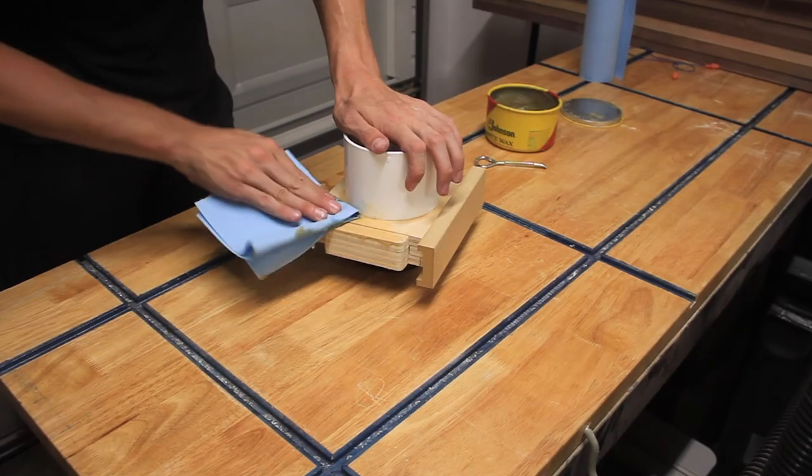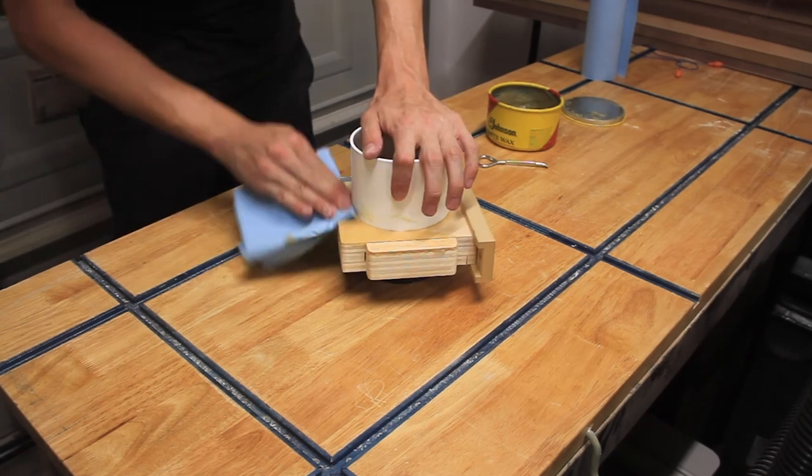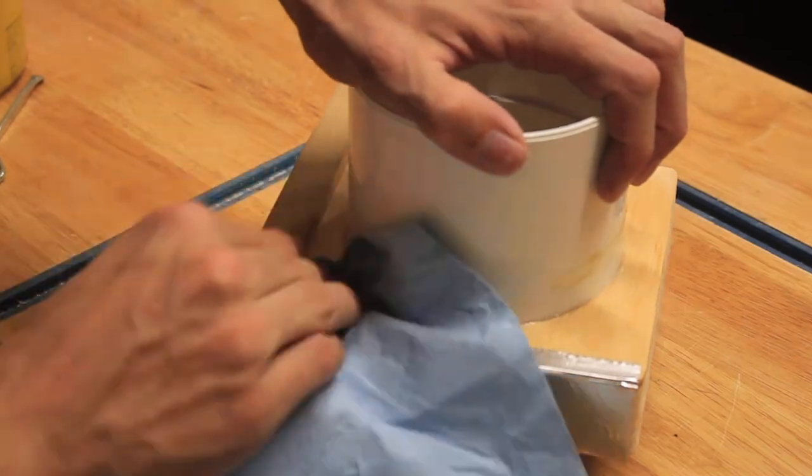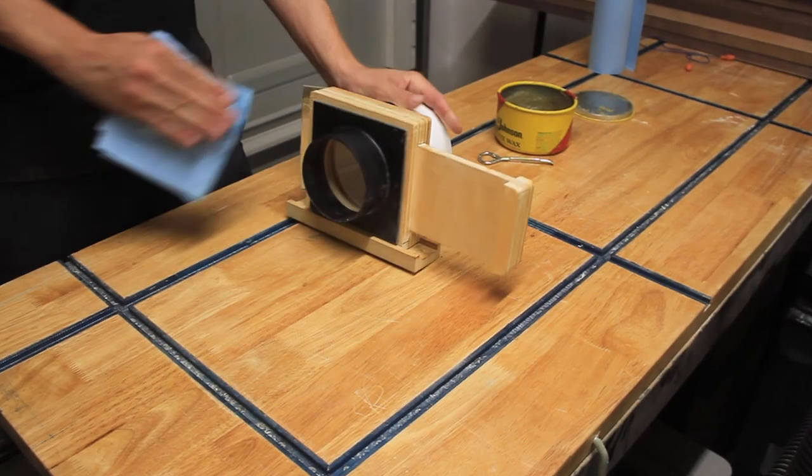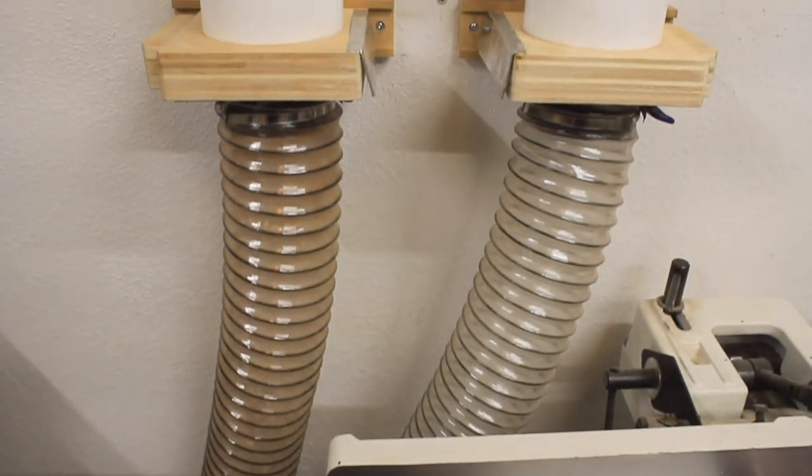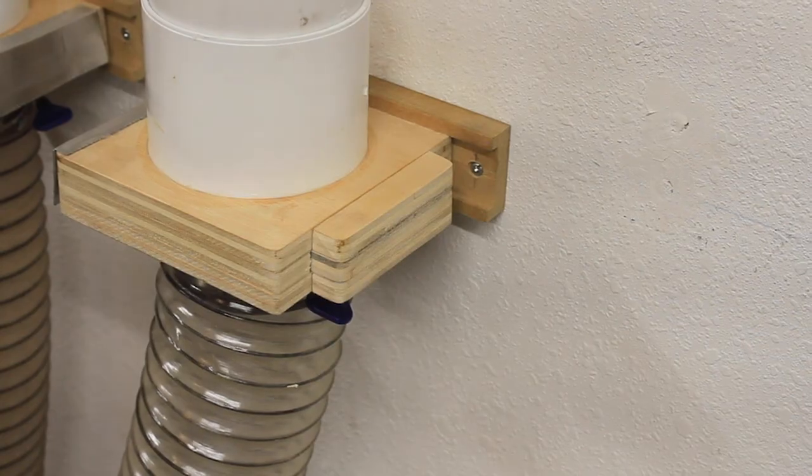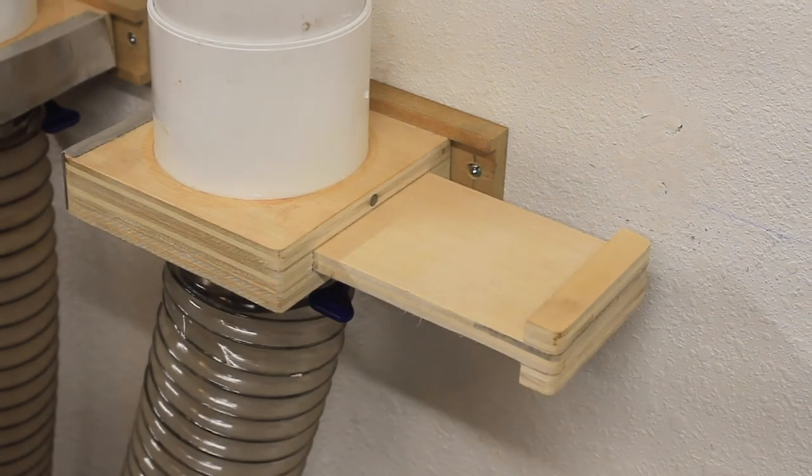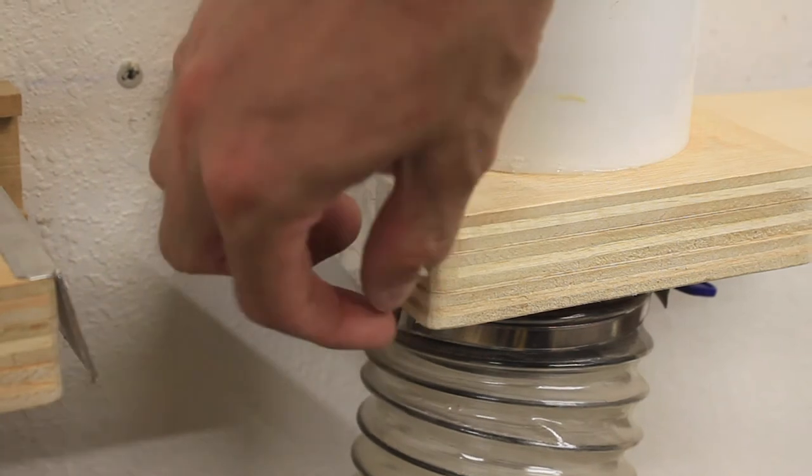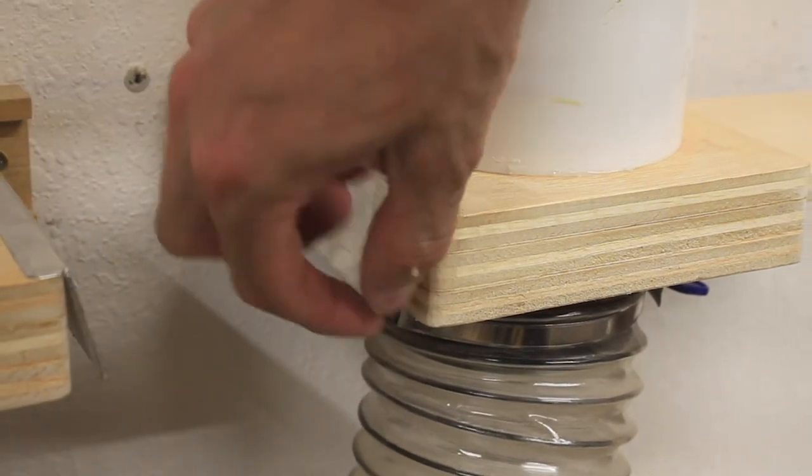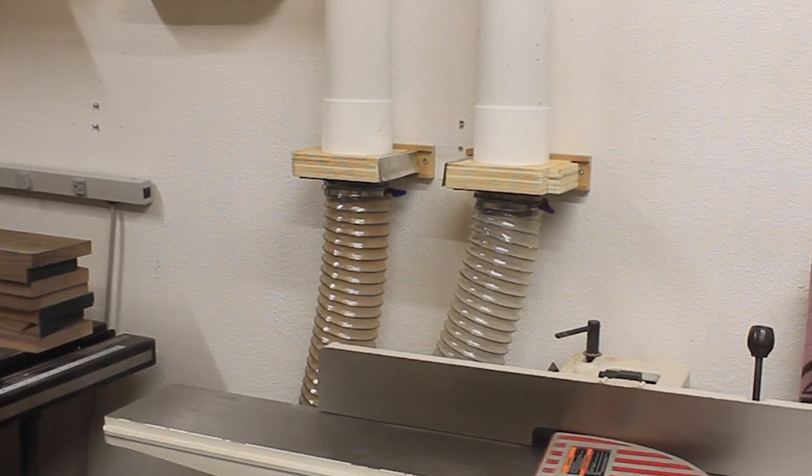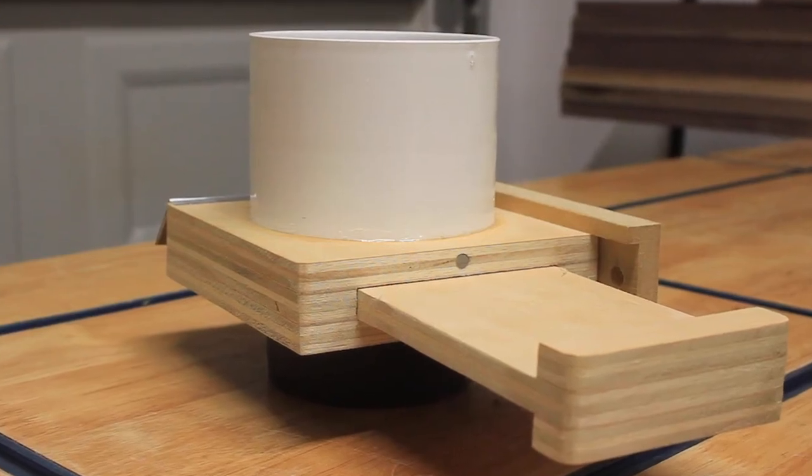This blast gate is super solid and way better than the cheap plastic or metal ones you can buy from Rockler or other woodworking stores. This is a super easy, one-day build that can be done with mostly scrap pieces you might already have laying around in your shop. The best part about this design is that you can modify it to fit anywhere in your system by just building it with different top and bottom connectors depending on your needs. These gates have a perfect seal and no air gets pulled through when closed. I made this design by combining several ideas from some other YouTube videos. I will link to those below.